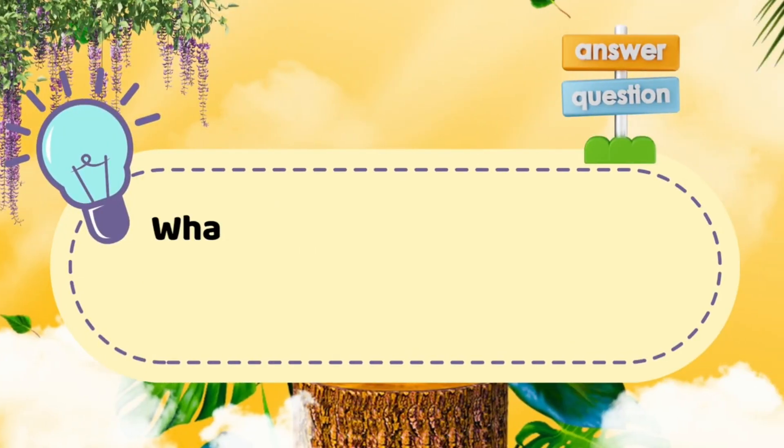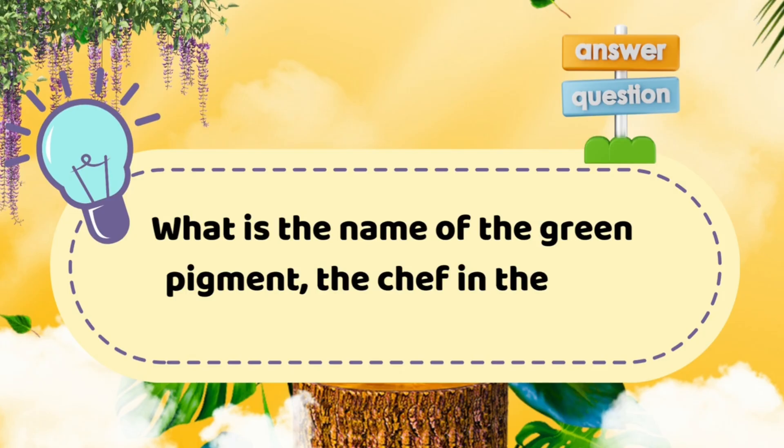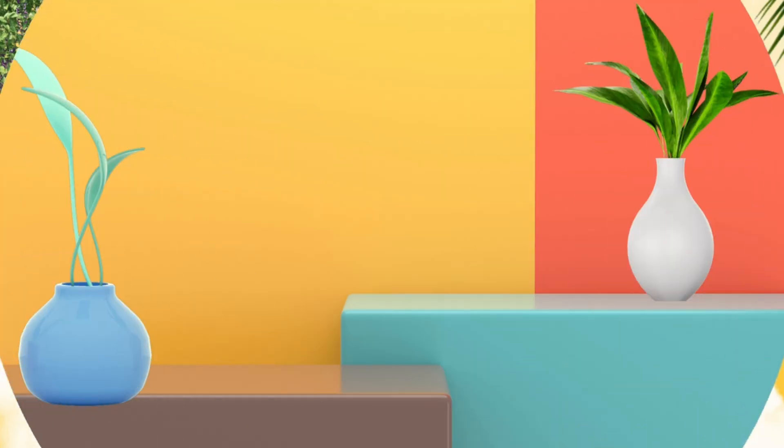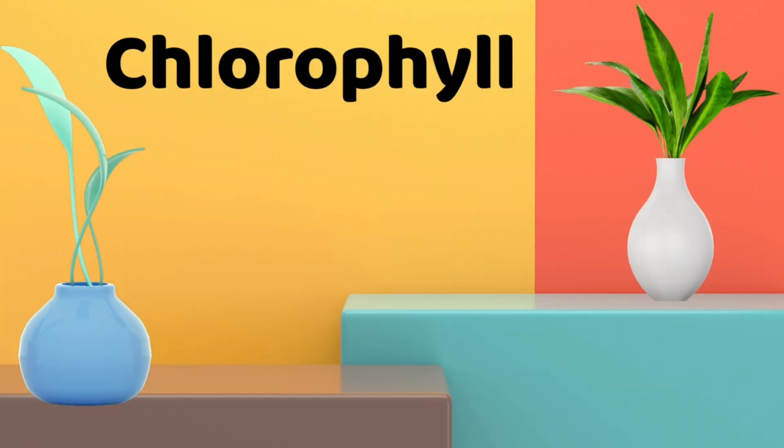Question one: What is the name of the green pigment, the chef in the leaf kitchen? Answer: chlorophyll. Great job, you remembered the little green chef.